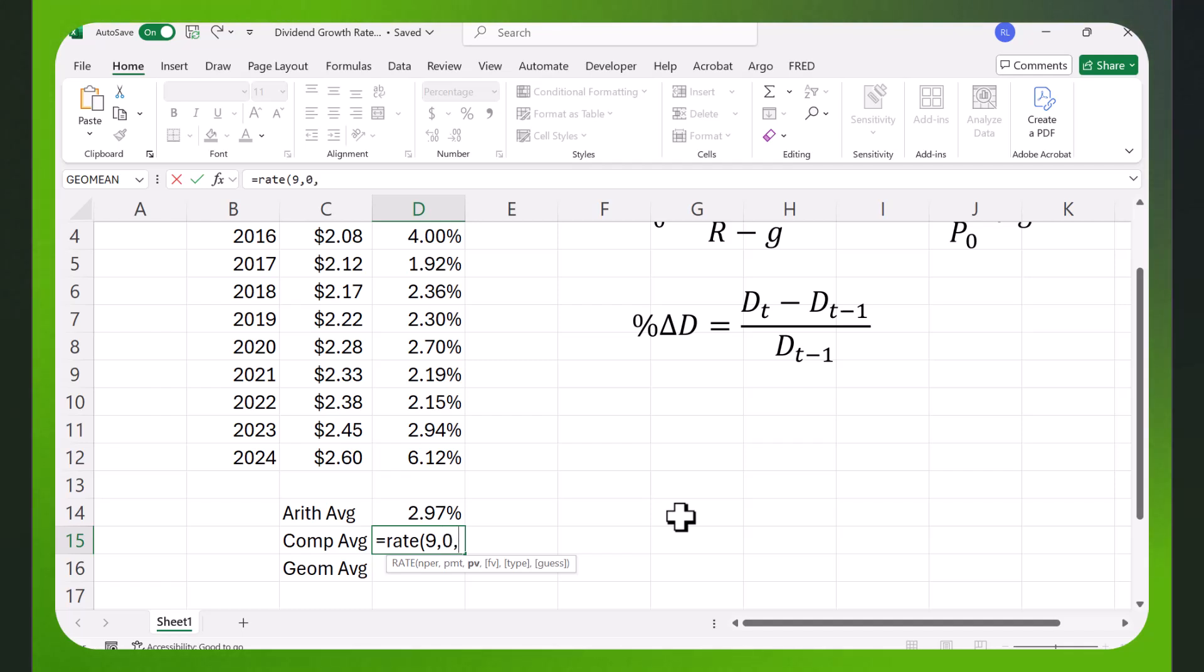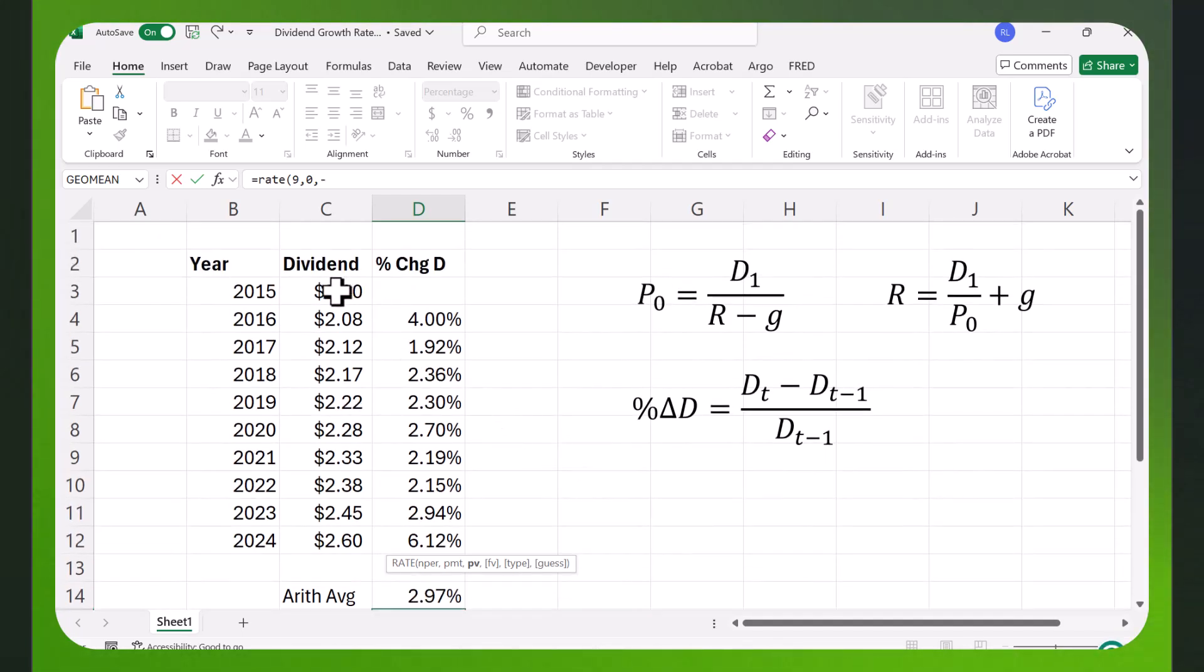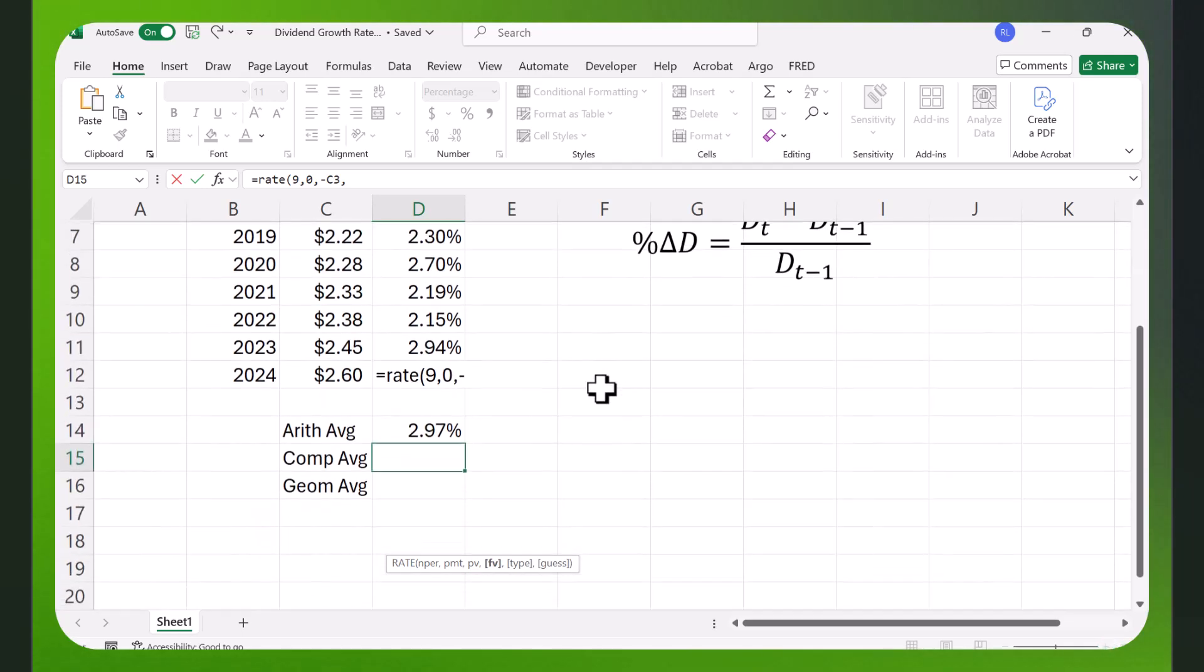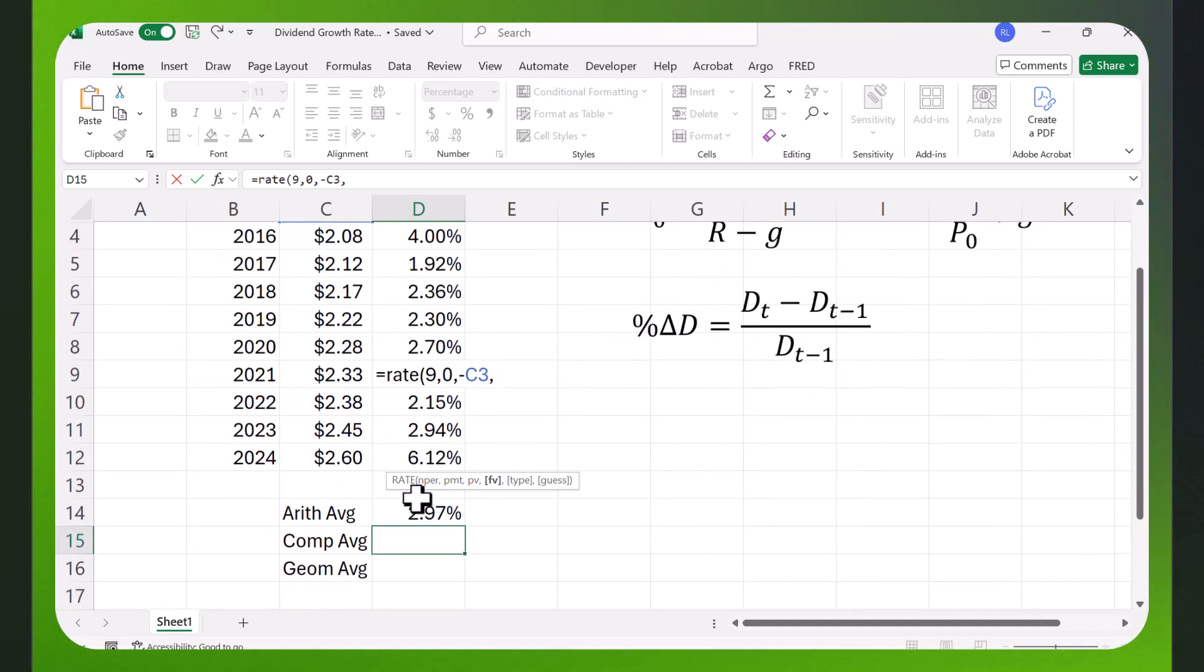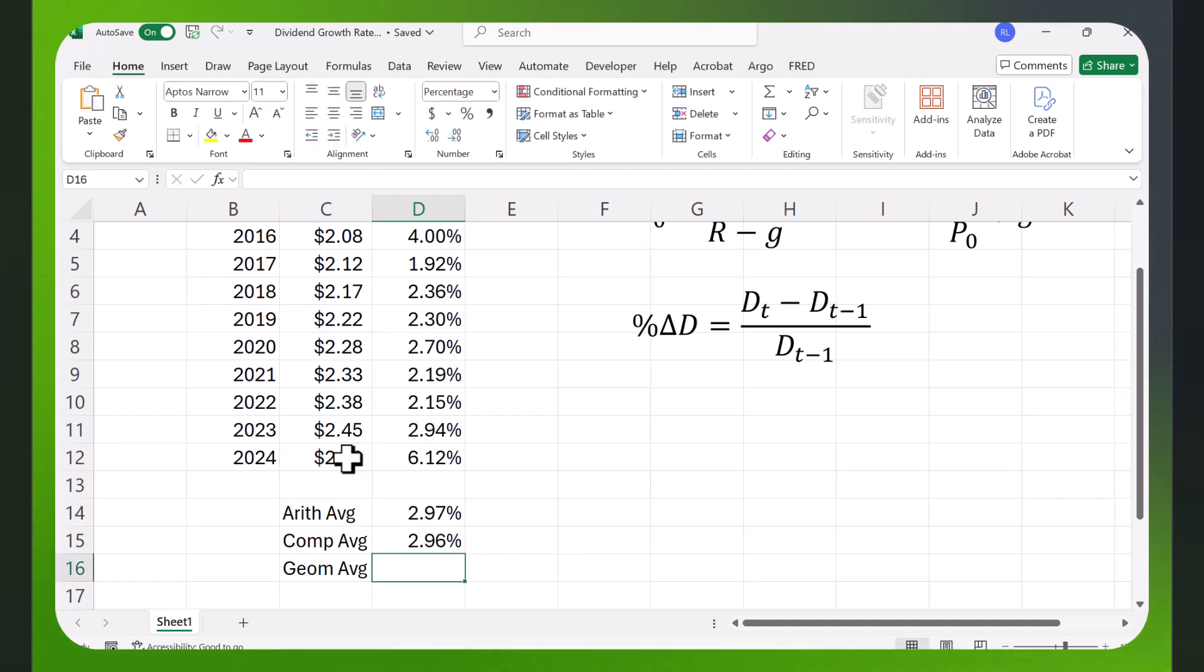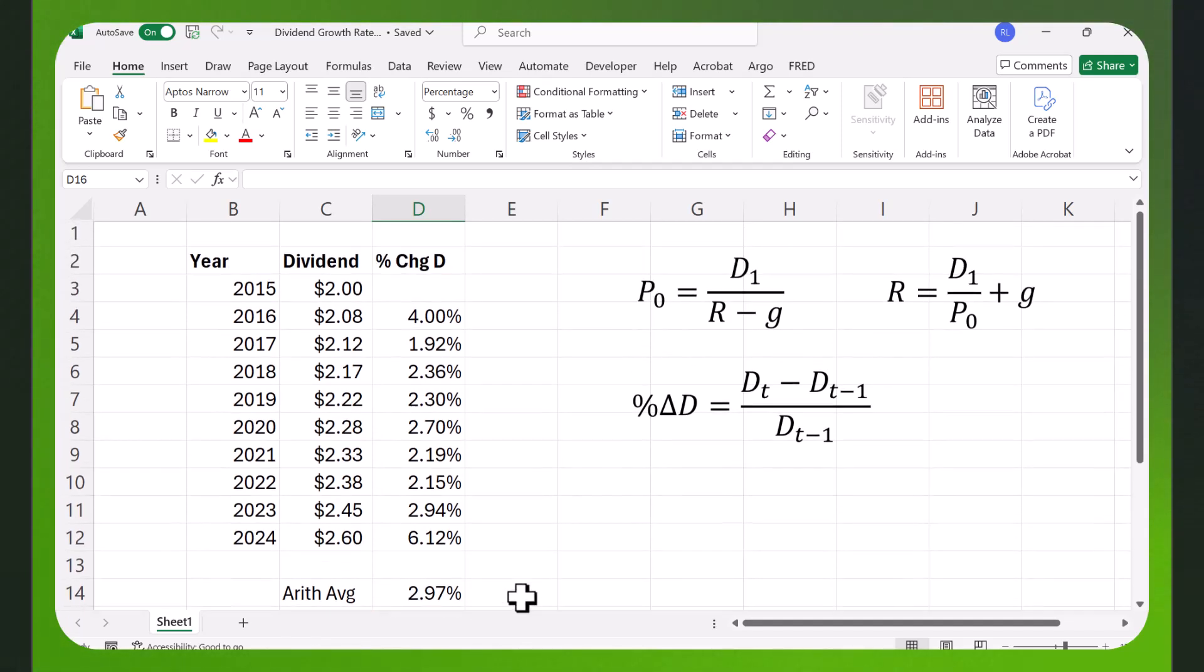It wants the present value, so the present value is the first dividend. You have to put that in as a negative number. Then I'm going to put in the future value, this last number here. I'll hit enter and I get 2.96%. It's a little bit different than this one. This is the compounded return. It turns out that the compounded return is exactly the geometric average.